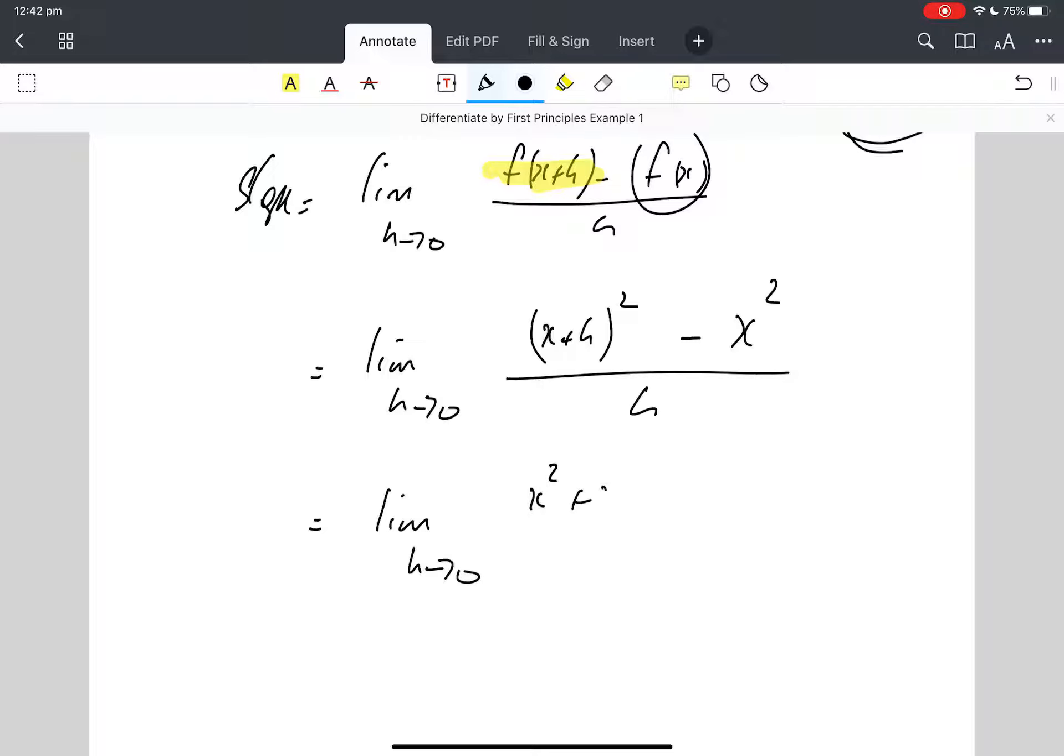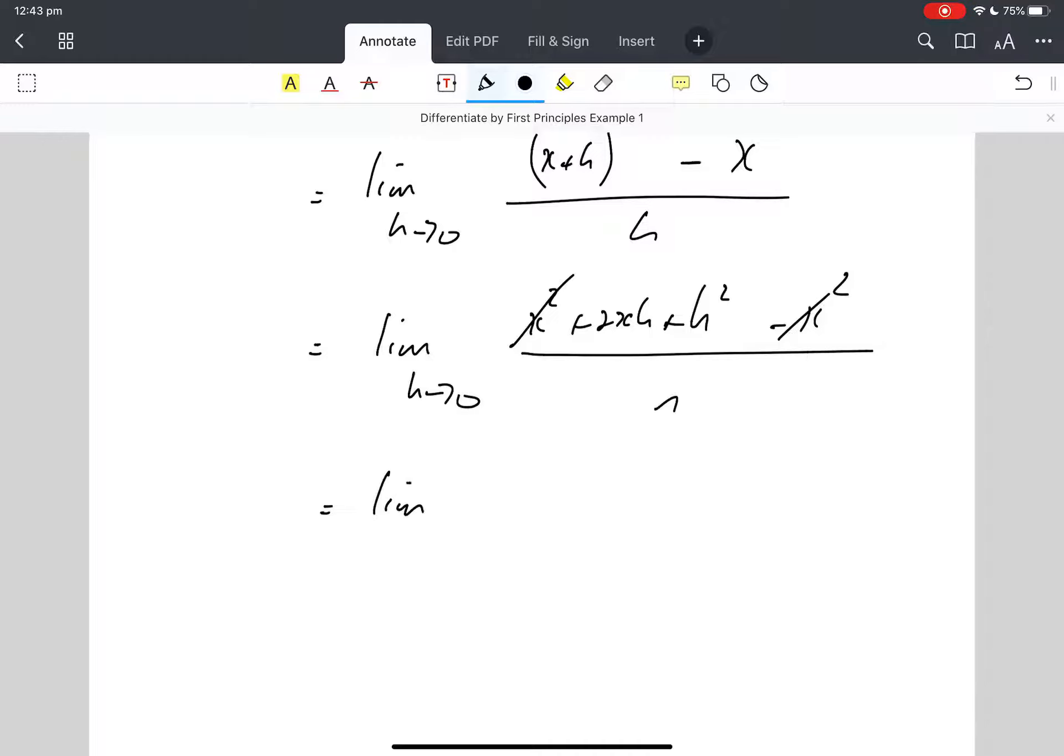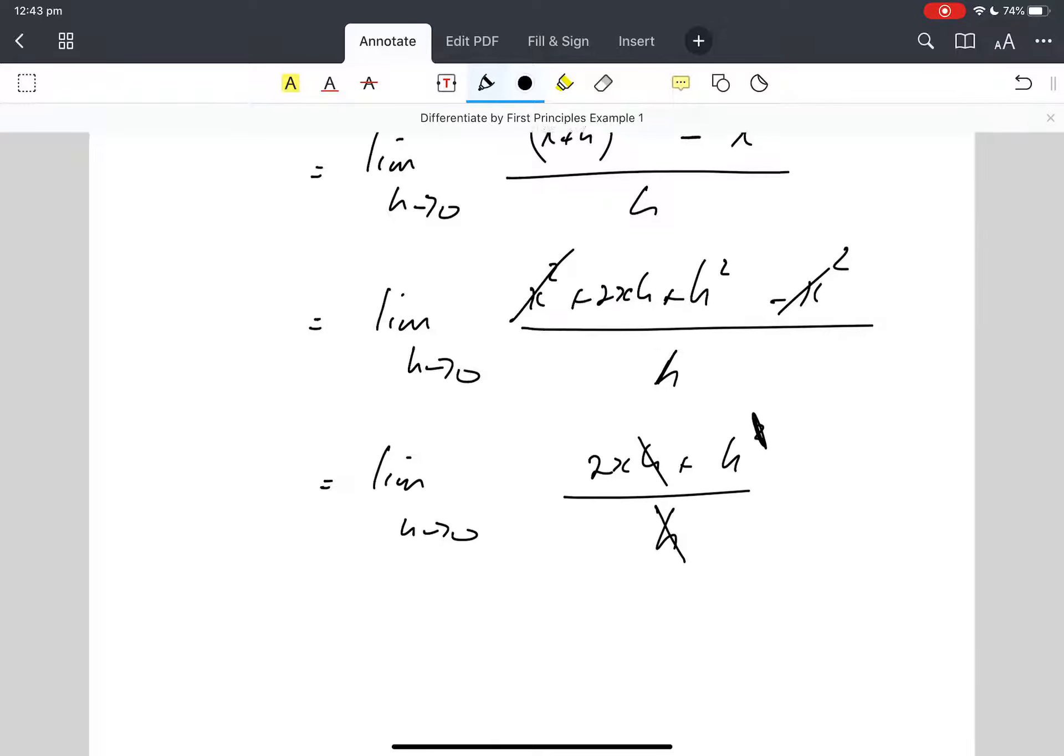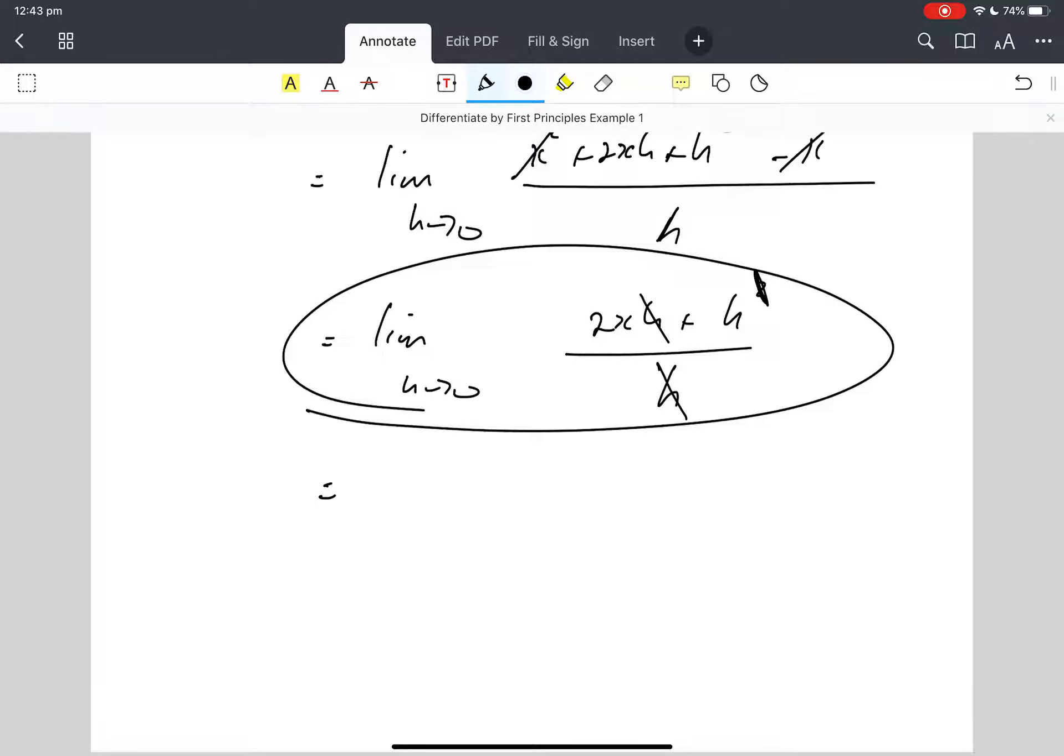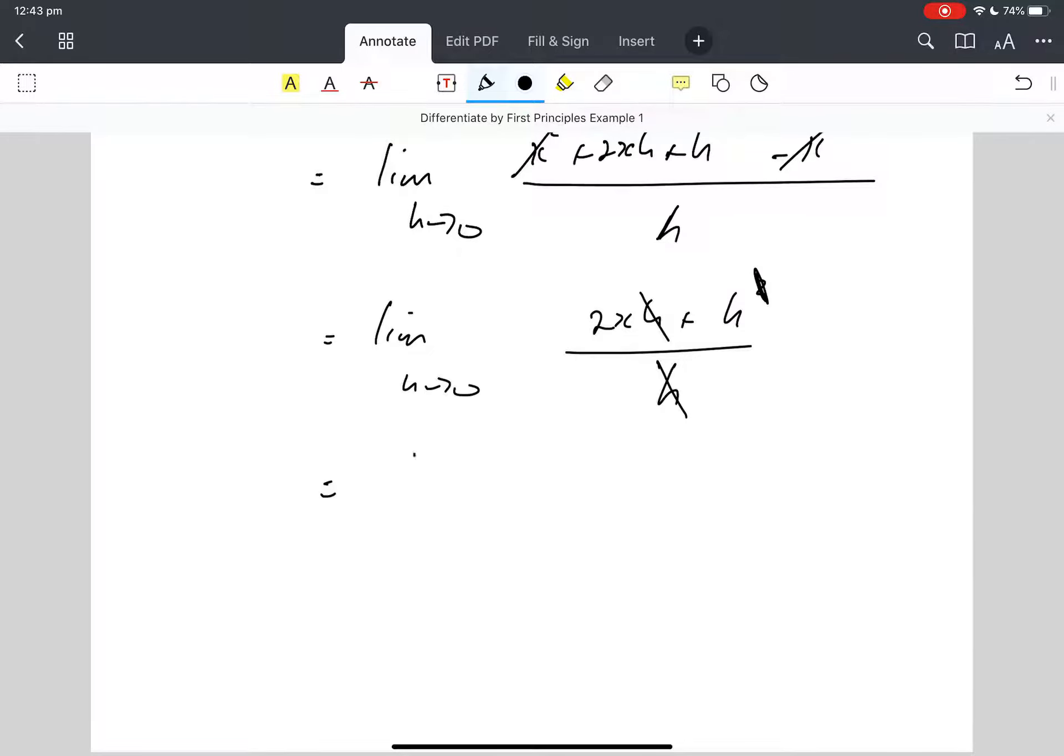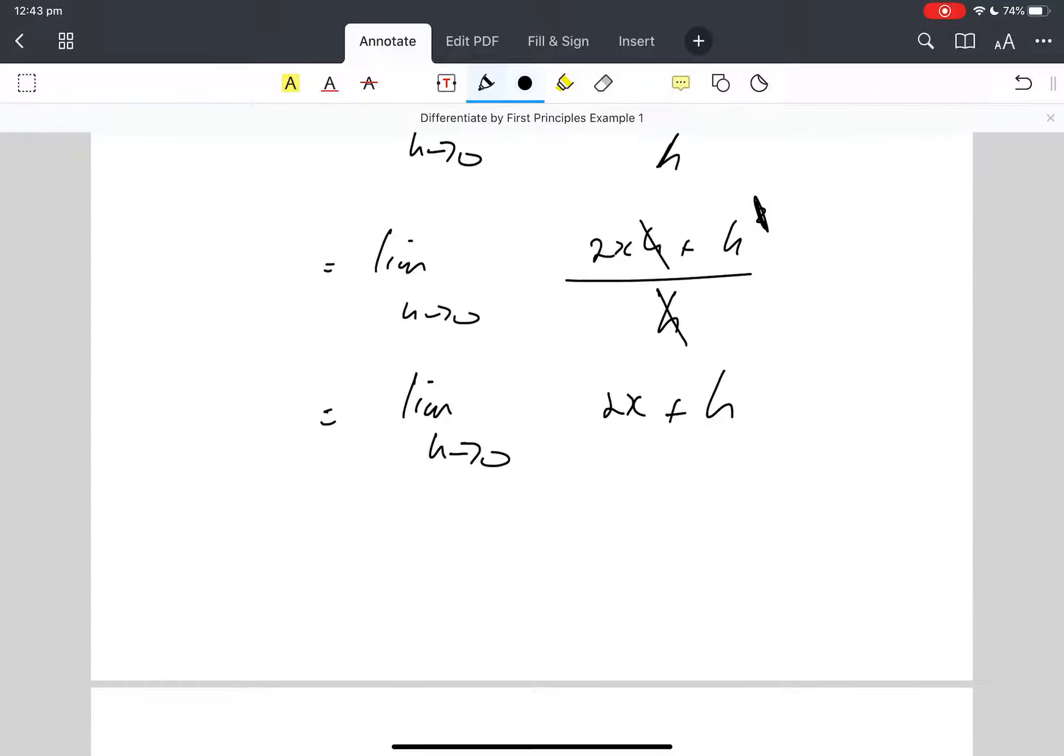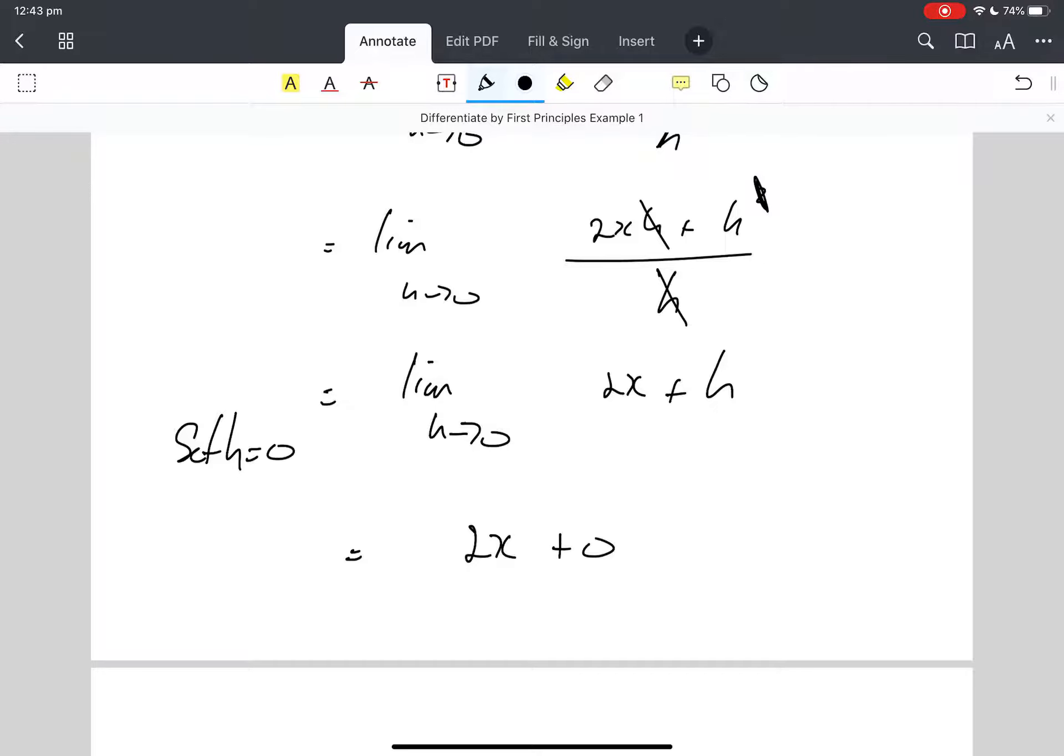Okay, x squared plus 2xh plus h squared. The x squareds go. Hey, I've got h's in both of these top two terms, so I'm dividing everything by h. So when I divide the first term by h, the h goes, and when I divide the second term by h, one of them goes. You need to show me your working in that step there, if you don't show me your working, you're going to lose a mark. You've got to cancel properly. So it's 2x plus h left. Okay. I'm not dividing by h anymore, so I can set h equal to zero. So it's just 2x plus zero, so I don't need to put it.